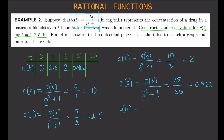Last but not least, C of 10 is 5 times 10 divided by 10 squared plus 1, which is 50 over 101, approximately 0.495. So that's 0.495. Our table is now complete.